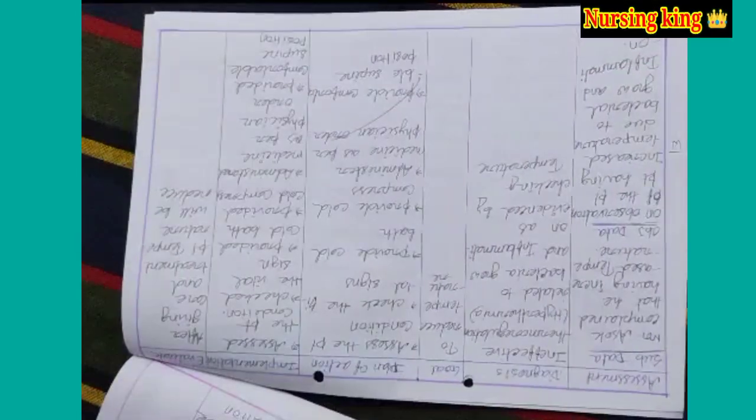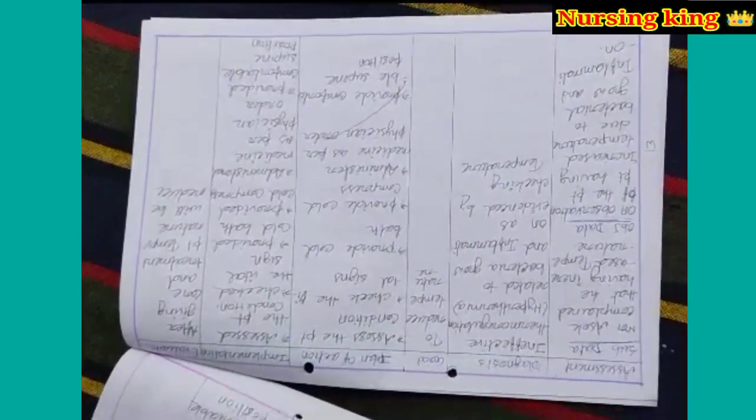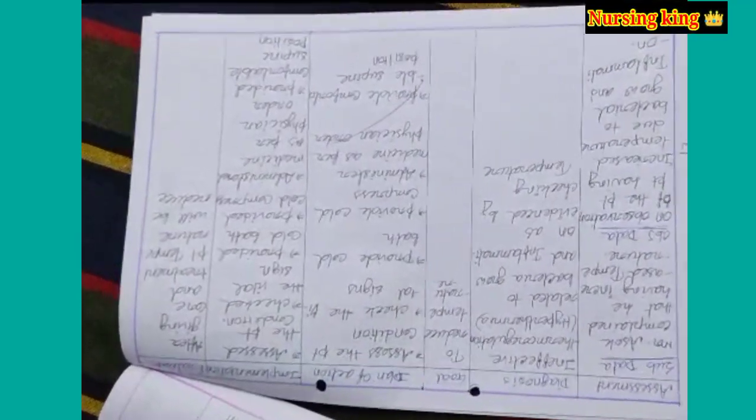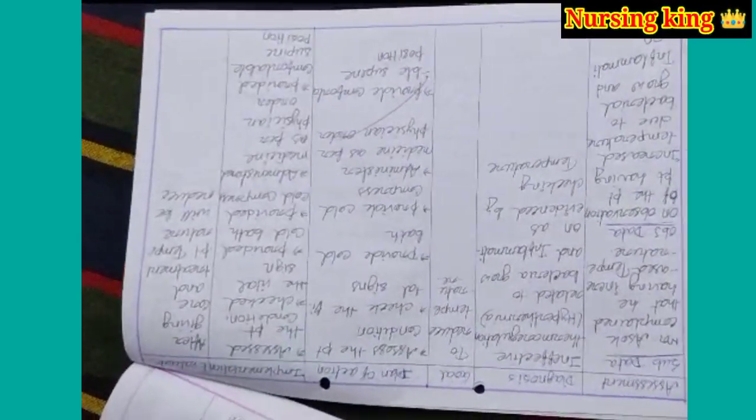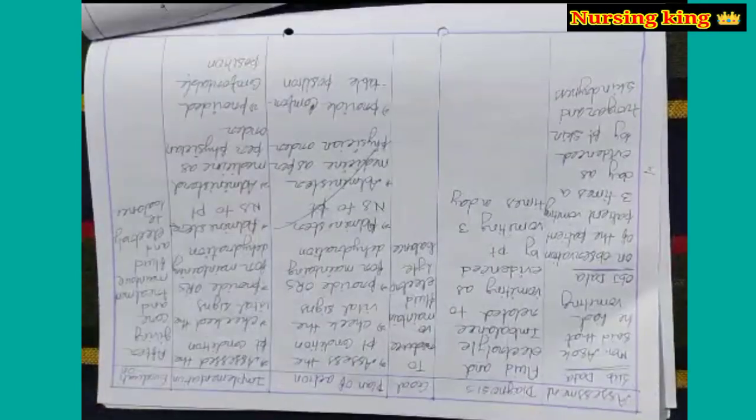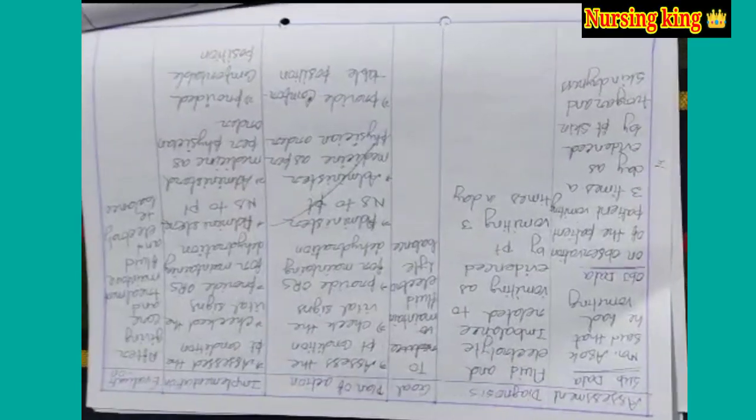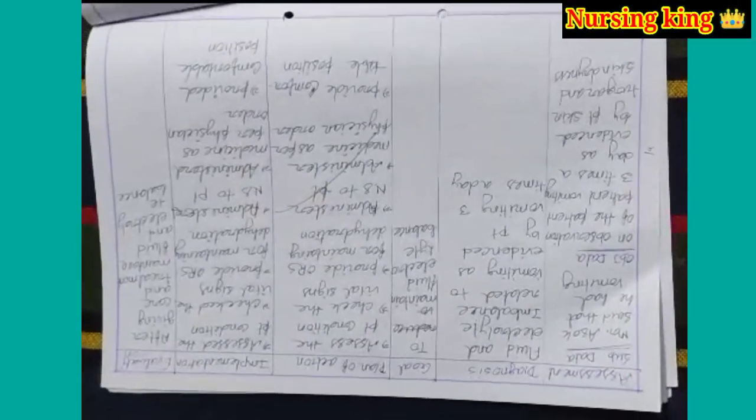In the nursing care plan: assessment, diagnosis, goal, planning, implementation, and evaluation. In the assessment, you have to write the subjective data and objective data.